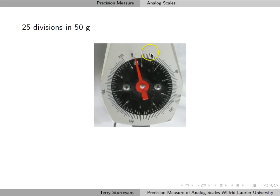For this third spring scale, if we count the divisions, we have 5, 10, 15, 20, 25 divisions in 50 grams, which means it's 2 grams per division, so we have a precision measure of 1 gram.